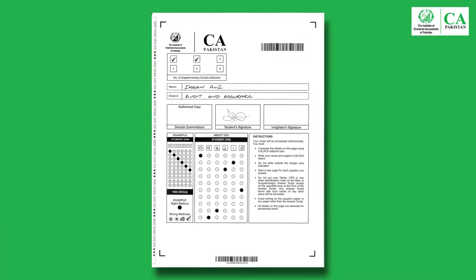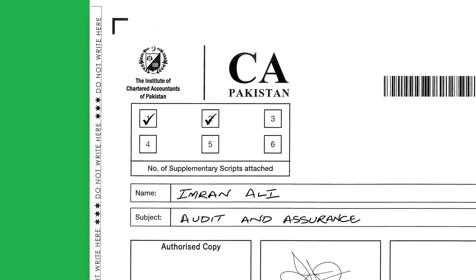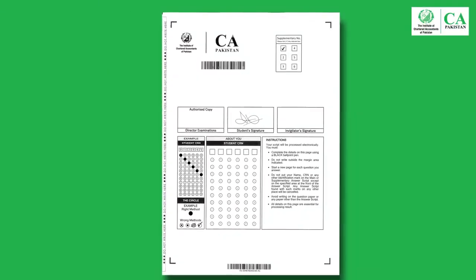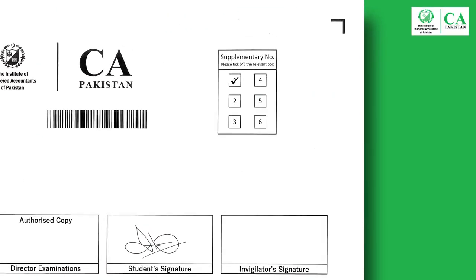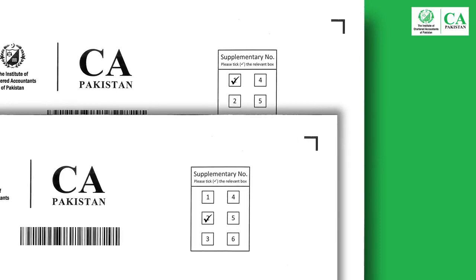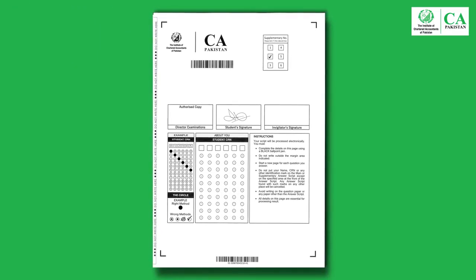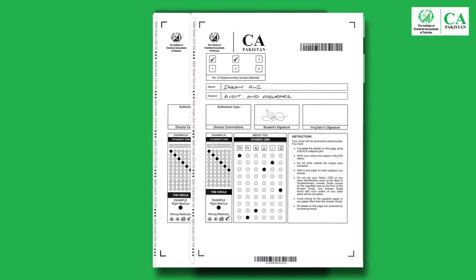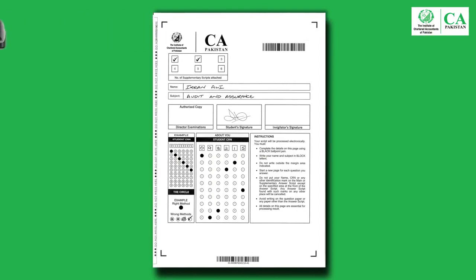Before submission of the answer script, check and ensure that the front page of the main and all supplementary answer scripts taken by you have properly been filled in, that you have marked the number of supplementary scripts attached in the relevant box at the front page of the main answer script, and that you have marked the supplementary number in the relevant boxes at all supplementary answer scripts taken. After checking, ask the invigilator to staple your supplementary scripts with your main answer script at the time of submission. Thank you.